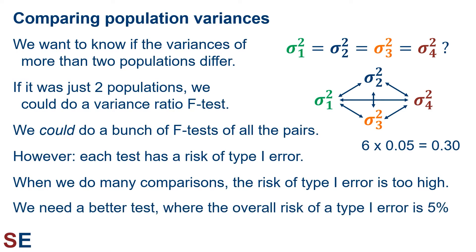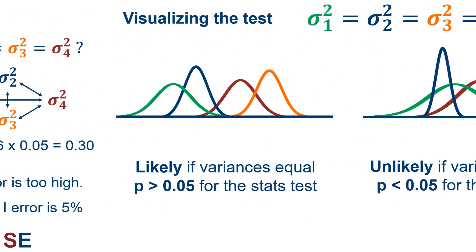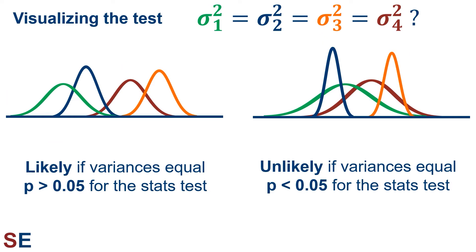We need a better statistical test — one where the overall risk of type 1 error is 5%, which we typically find to be an acceptable risk. We can visualize what this test would look like. Our null hypothesis will be that the population variances are all equal. If we took a sample from each population and got sample variances that are all fairly similar, this is the likely result if the population variances are equal, and we should get a p-value larger than 0.05.